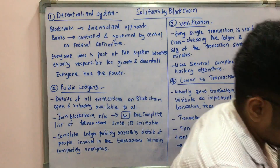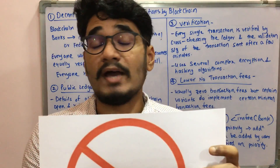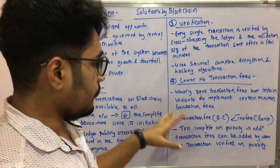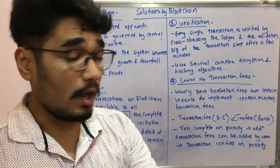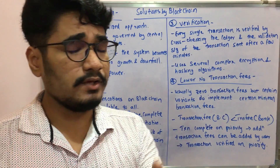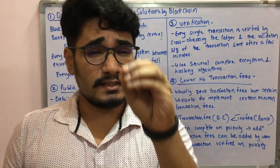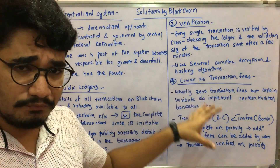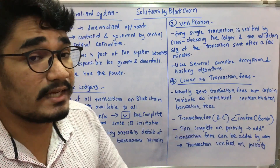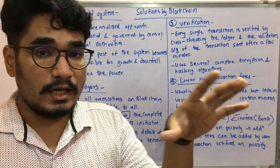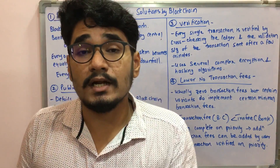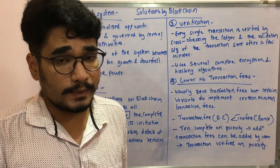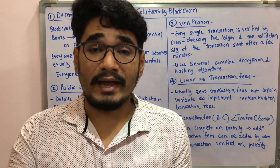After verification, the fourth solution is low or no transaction fees. The current banking system had the problem of high transaction fees, but blockchain has absolutely zero or very low transaction fees. Certain variants like Litecoin and Dogecoin do carry a small amount, but even then the transaction fee is very low compared to banks. If you want to prioritize a transaction, you can add an additional fee to that node and the transaction is verified on priority.